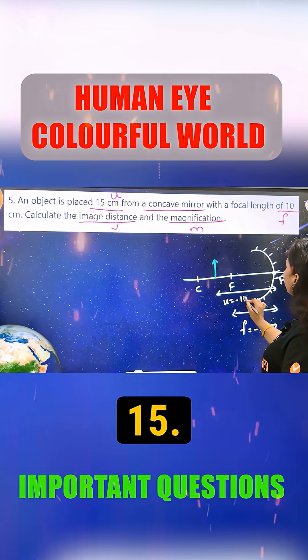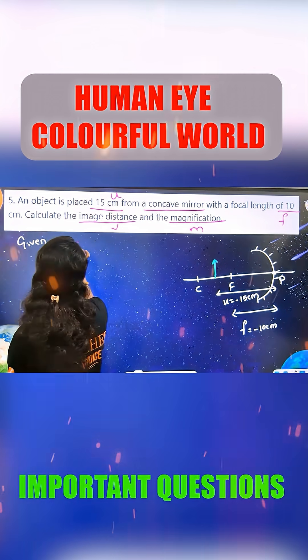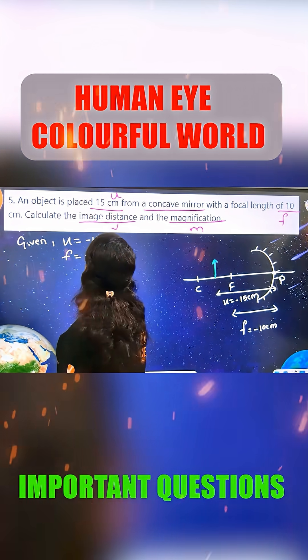U is equal to minus 15. Object distance is always negative. U is equal to minus 15 cm. And F is equal to minus 10 cm.